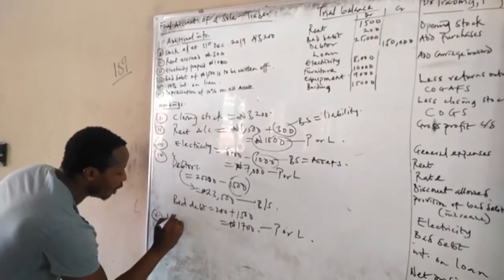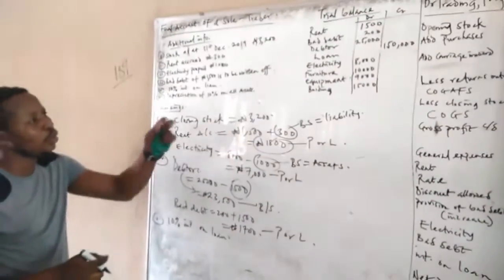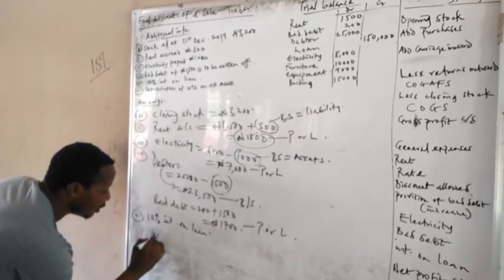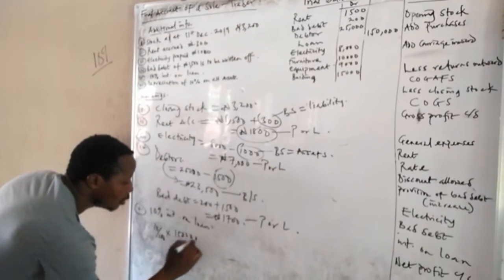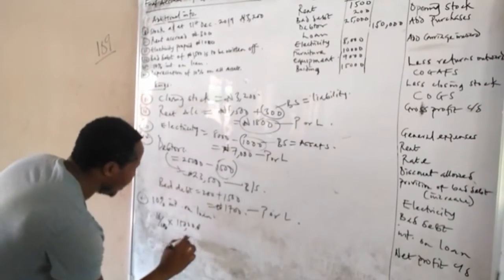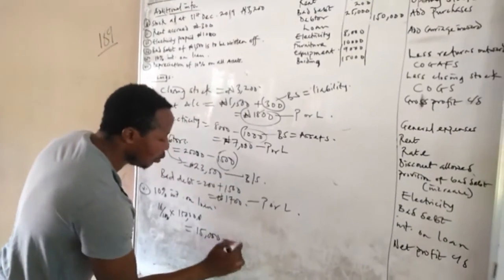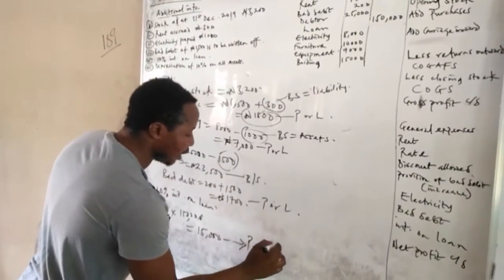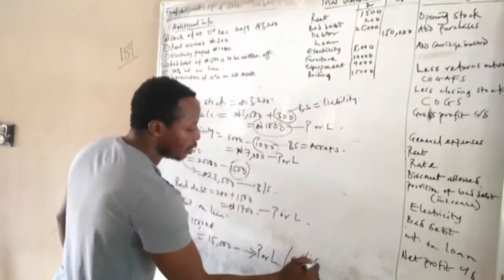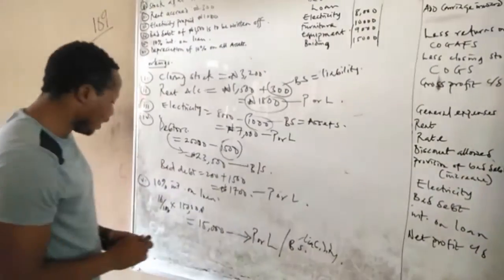Number five: interest on loan at 10%. Go to your trial balance and find the loan amount, which is 150,000. Calculate: 10 over 100 multiplied by 150,000 equals 15,000. This 15,000 goes to the expenses side of the profit or loss account, and also to the liability side of the balance sheet.